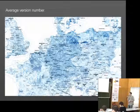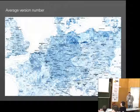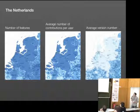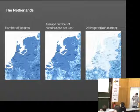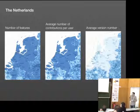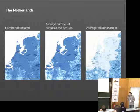The Netherlands is a very interesting example. If you compare the number of features and the average number of contributions per user, which is expectably very high, with the average version number, which is low — mostly between one and two — you can see that the data is complete but there's not a lot of editing going on. That may be related to data imports, and that's something we can show with our approach.